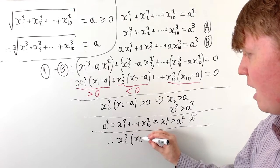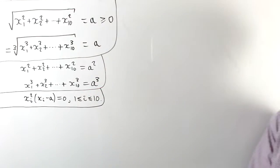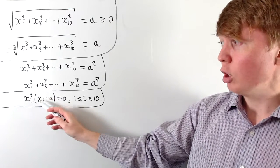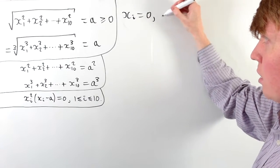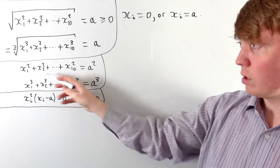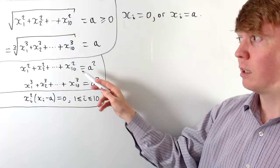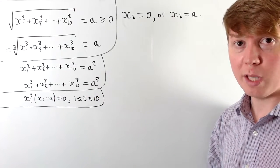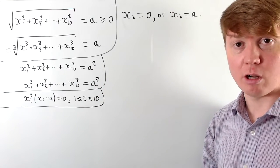So for all i from 1 to 10, xi squared times (xi minus a) equals zero. This means either xi equals zero or xi equals a. If one of our xi terms equals a, then looking at the sum of squares equaling a squared, all remaining x terms must be zero — otherwise the left-hand side would be too big. There's also the possibility that all x's are zero, in which case a must equal zero.